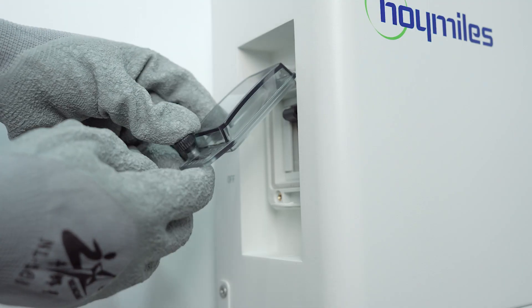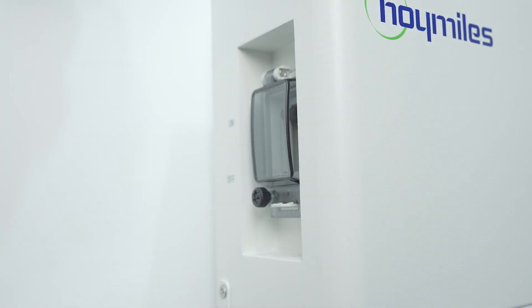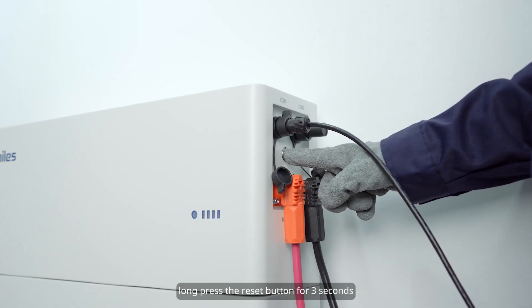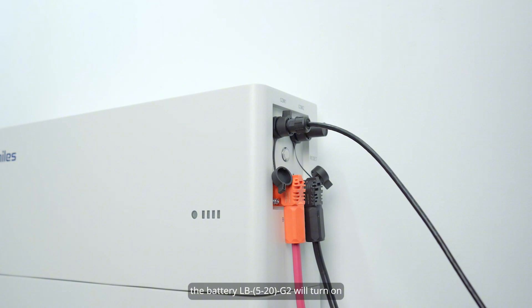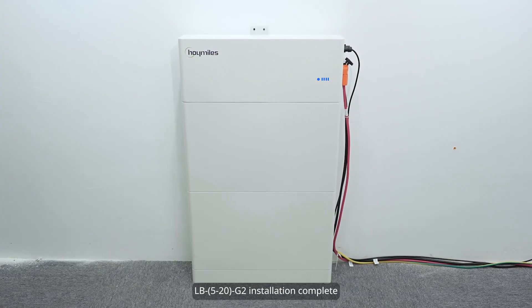Turn the left switch on. Press the reset button for 3 seconds. The battery LB-520G2 will turn on. The round blue light indicates the battery is running well. LB-520G2 installation complete.